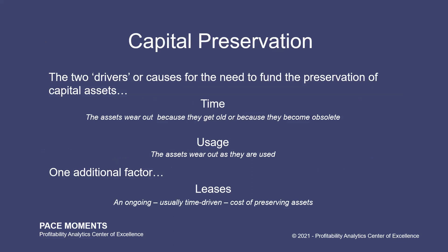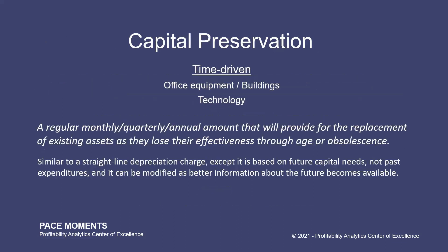There's one additional factor: leases. Leases are an ongoing, usually time-driven, cost of preserving assets. Time-driven capital preservation applies to things like office equipment, buildings, and technology. It's a regular, periodic amount that will provide for the replacement of existing assets as they lose effectiveness due to age or obsolescence. It can be similar to a straight-line depreciation charge, except it's based on future capital needs, not past expenditures, and it can be modified as better information about the future becomes available.